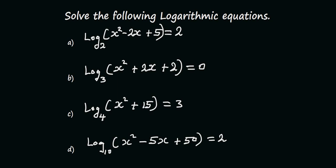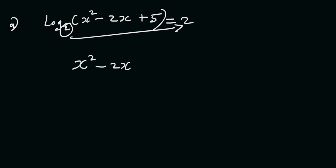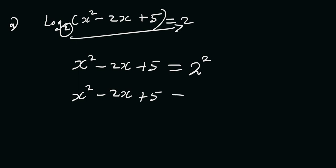We are starting with Question A. We have log(x²-2x+5) to base 2 is equal to 2. First, you must recognize 2 as the base and switch it over, making 2 the exponent. So when we do that, we have x²-2x+5 is equal to 2², and 2² gives us 4. So automatically this becomes x²-2x+5 is equal to 4.